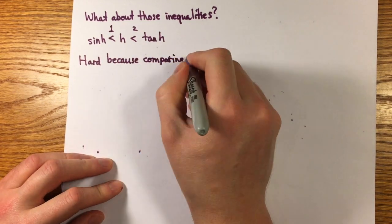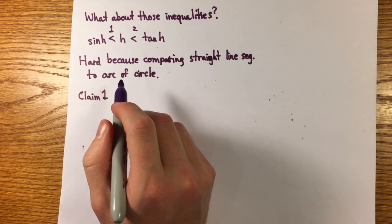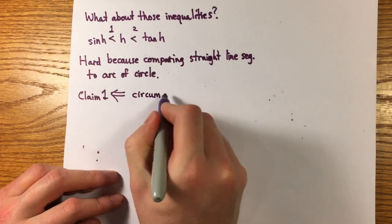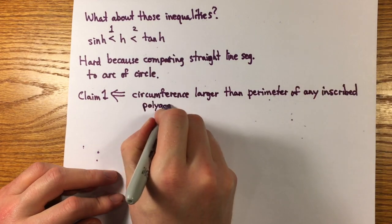Here, I just want to point out that the first claim is essentially equivalent to the fact that the circumference of a circle is greater than the perimeter of any inscribed polygon, and the second claim is equivalent to the fact that the circumference is smaller than the perimeter of any circumscribed polygon.